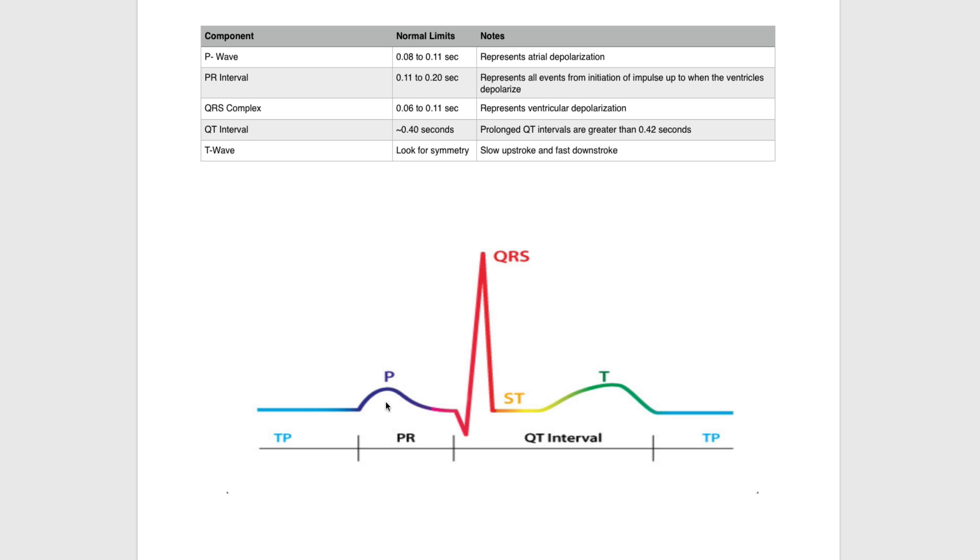The QRS complex, represented here in red, has a normal limit of 0.06 to 0.11 seconds. We consider it wide at 0.12 seconds. The QRS complex represents ventricular depolarization.